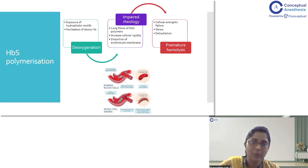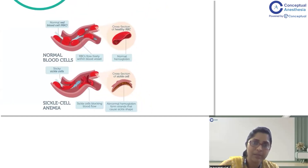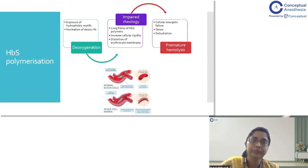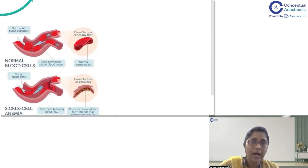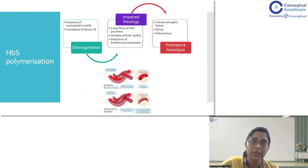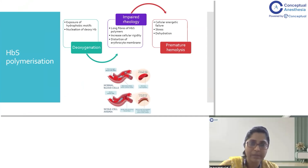There is nucleation of deoxyhemoglobin. In healthy RBCs, the cells are highly malleable and can move across any vessel. However, in sickle cell anemia, long thin polymers of hemoglobin form in the sickling cell, causing increased cellular rigidity and distortion of the erythrocyte membrane. These sickle cells occlude one another, forming long polymer strands causing vaso-occlusion. This impaired rheology leads to cellular energy failure, stress across RBCs, dehydration, and premature hemolysis.